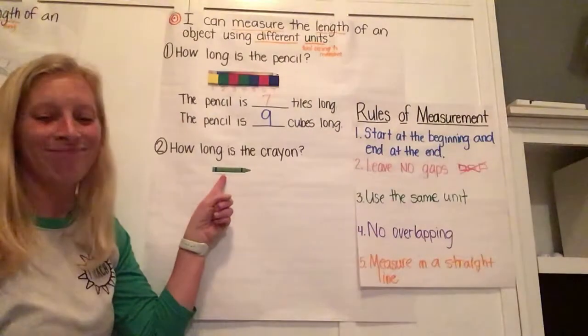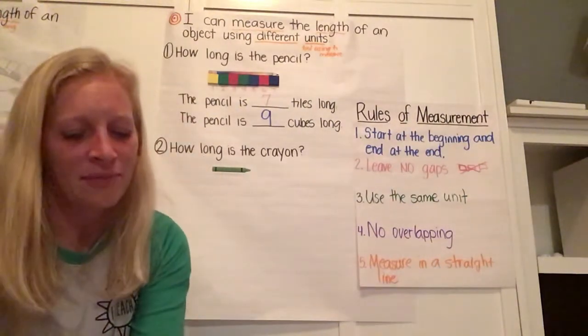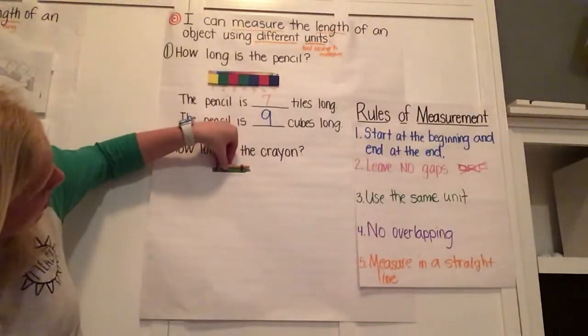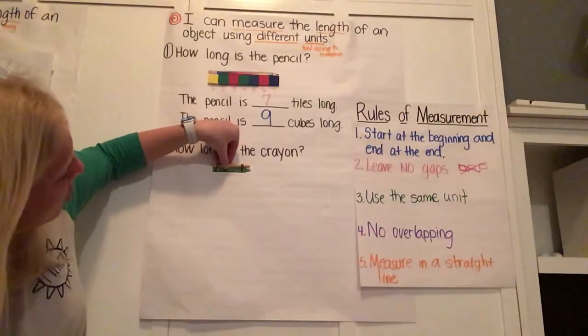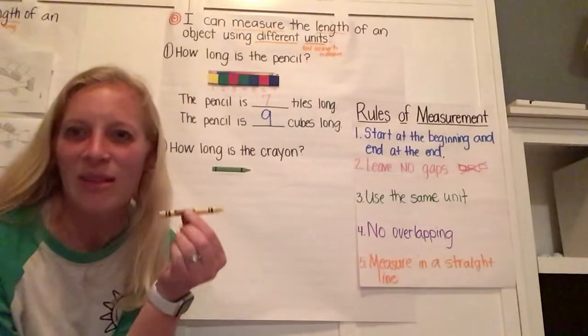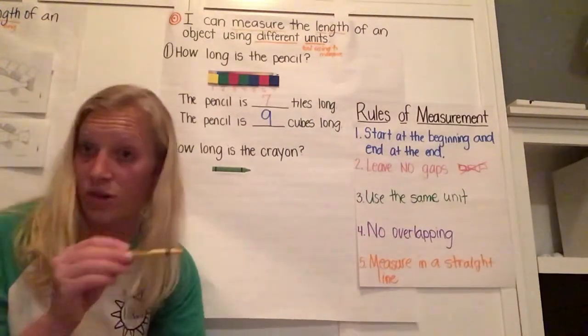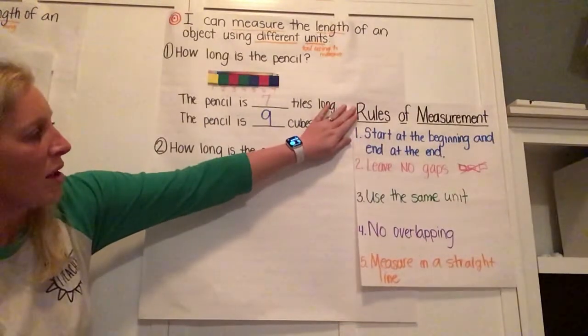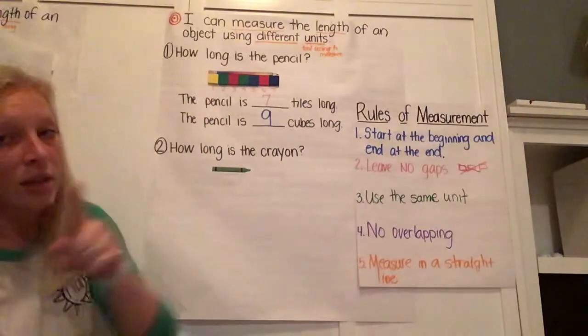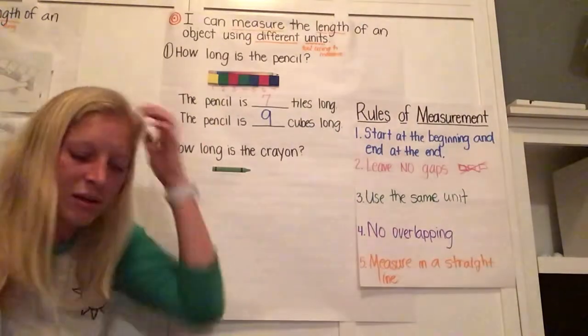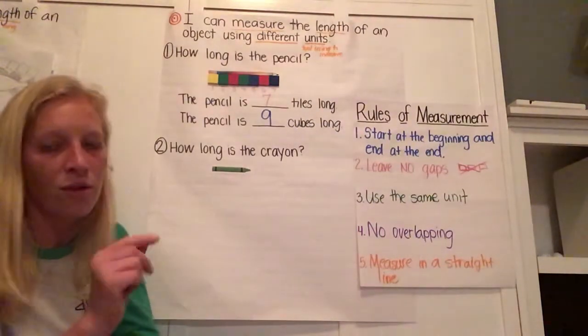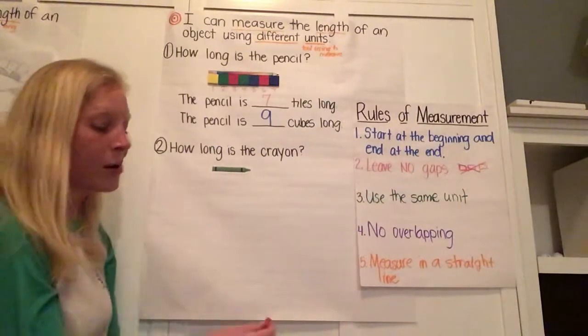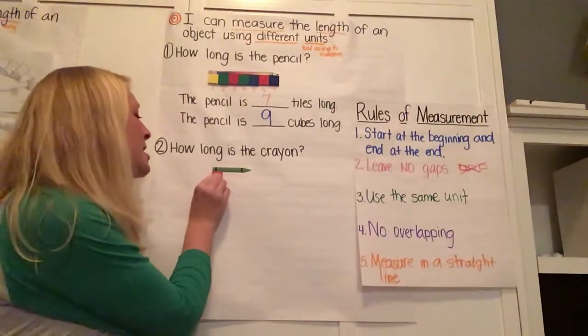This time we're going to measure this crayon. I'm going to tell you the same thing I told you before. Just like my unsharpened pencil helped you measure the pencil I had up here, take a look at my crayon. If you can find a nice, beautiful crayon, you can measure that same thing, and it's the same length as the crayon I have up here. First, we're going to measure with tiles. How many tiles long is my crayon? Let's remember these rules of measurement. Start at the beginning and end at the end. Leave no gaps. Use the same unit. You're going to use those tiles first. No overlapping. Measure in a straight line. Thumbs in front of your tummy when you are ready.